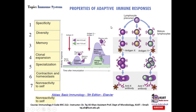Lymphocytes generated in primary lymphoid organs are equipped with specific receptors for specific antigens. For instance, antigen X selects one type of cell while antigen Y selects another. After this selection, the lymphocytes differentiate and generate a clone of lymphocytes with identical specificity for each respective antigen X and Y. In the future, when the same antigen is encountered, these memory cells or clonal cells will respond respectively to antigen X and antigen Y.